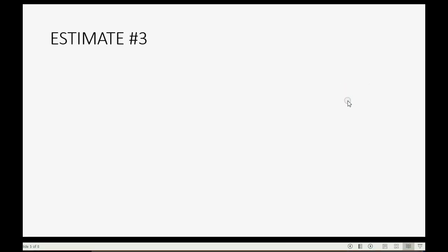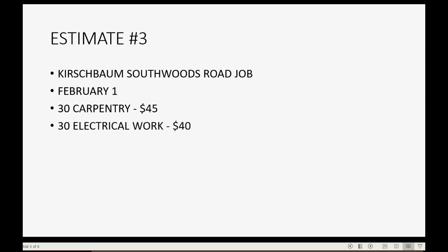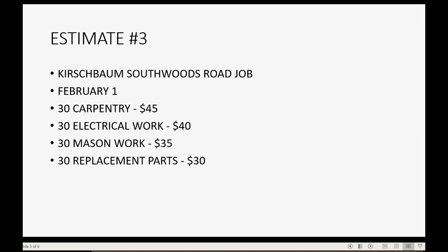Estimate number three will be for the Kirschbaum Southwoods Road job. We'll date it February 1, and it will have 30 units of carpentry at $45 each, 30 of electrical work at $40 each, 30 mason work at $35, and 30 replacement parts at $30 each. The most important thing we will put in this estimate is the credit memo method written in the message at the bottom so we remember how we got paid and what method we're using for this job.